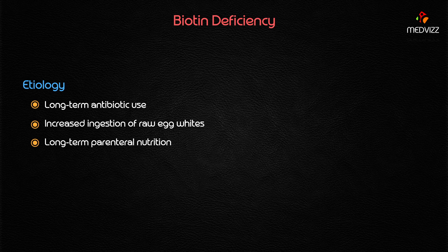The important etiology of biotin deficiency: the most common cause is long-term antibiotic use. It can also be due to increased ingestion of raw egg whites, because raw egg whites contain a protein called avidin. Avidin is a protein that mainly interferes with biotin digestion.